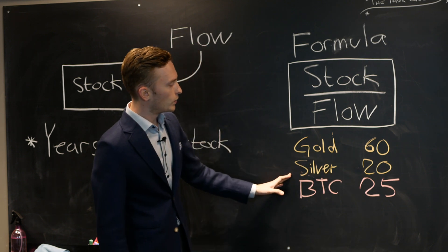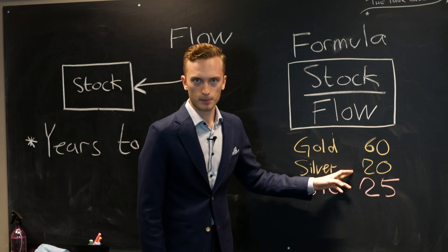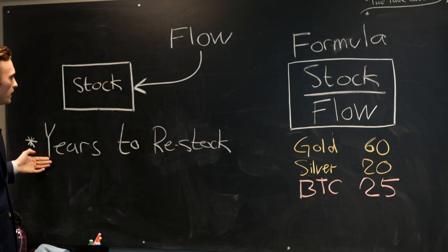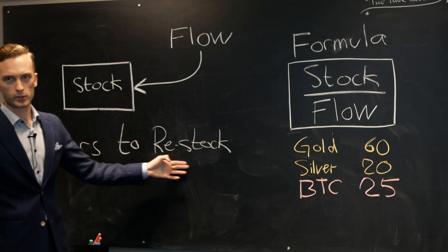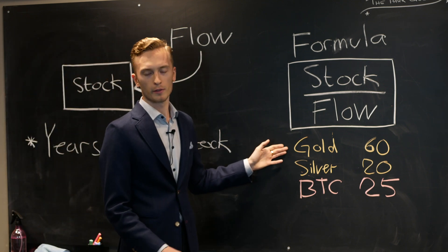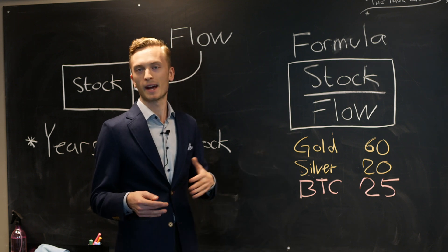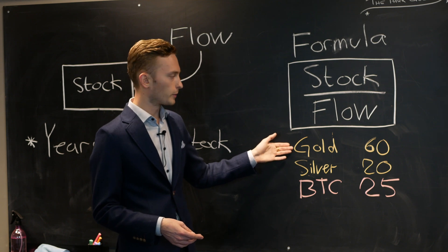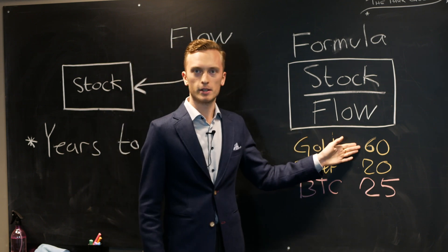But what does this really mean? What does this number really mean? Well if we look at it from a practical point of view the stock to flow number is really the years to restock. If we were to run out of gold today, all of the gold that exists on this planet that has been mined, how long would it take us to re-mine all of that gold? It would take us 60 years.